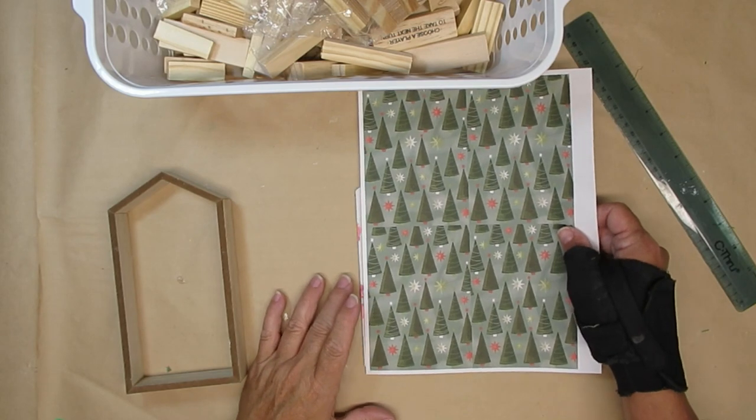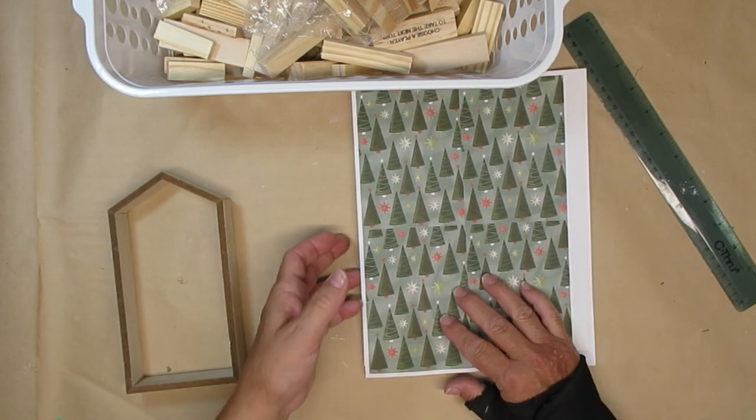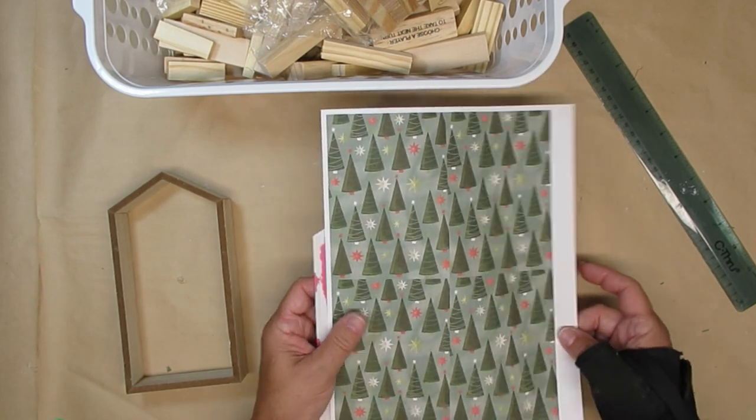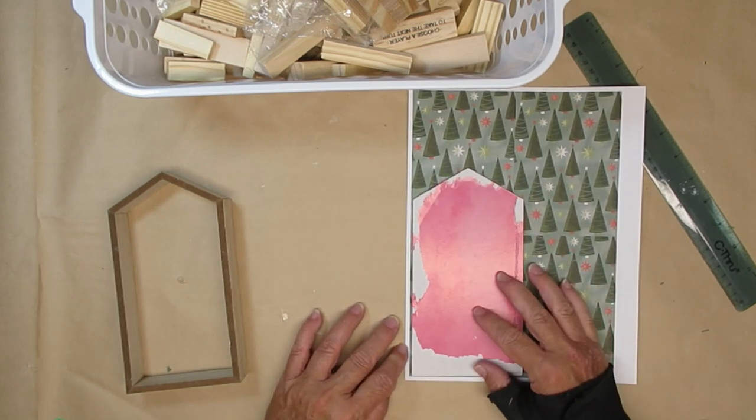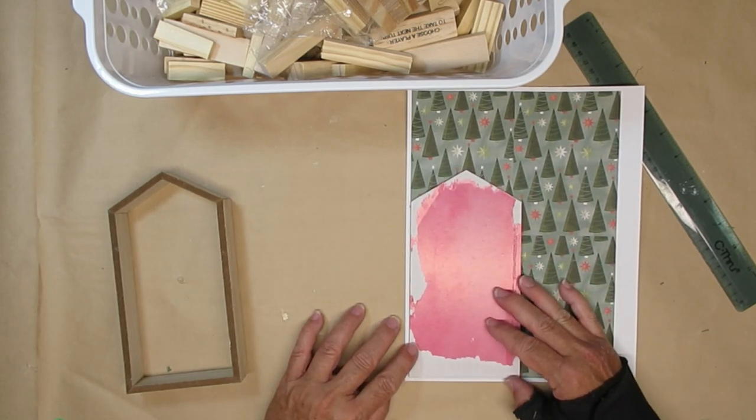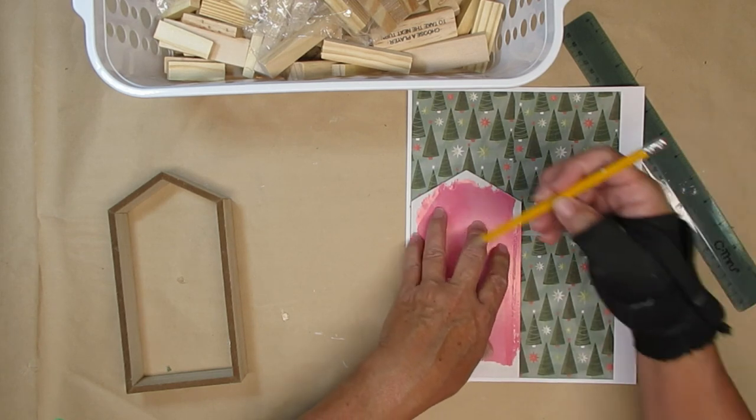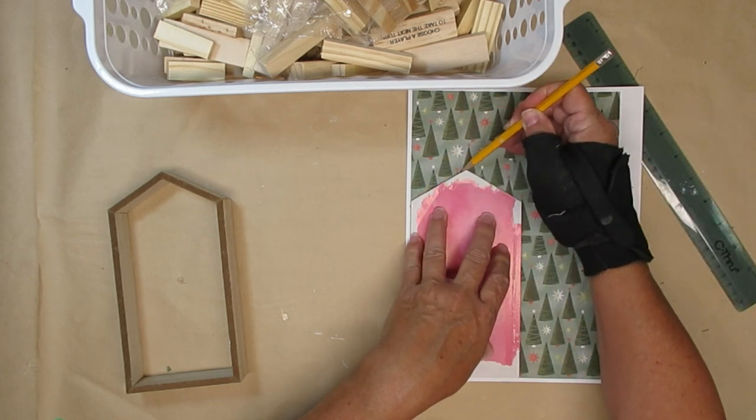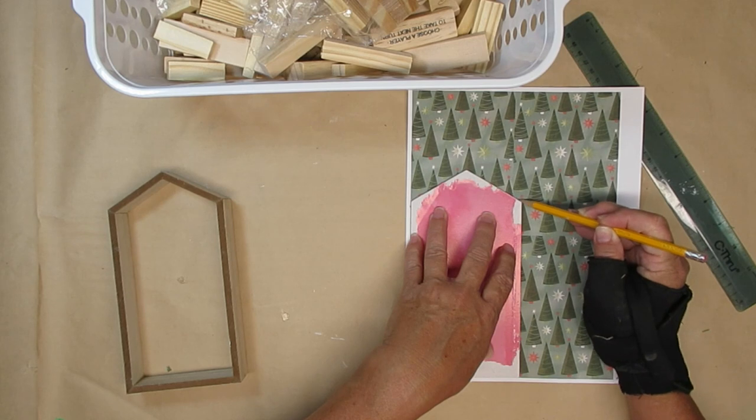I'm trying to use up what I have in my stash so I found this Dollar Tree house. I pulled off the backing and then I printed off this Christmas tree background paper just using regular printer paper. I'm going to trace it out and then using a glue stick I'm going to glue it onto the backing of the house.